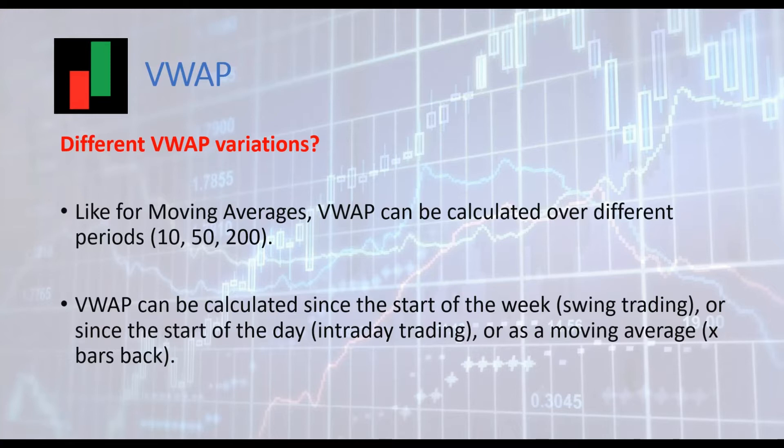There are different variations for the calculation of VWAP. First, we can calculate VWAP based on a certain quantity of bars: 10, 50, or 100. We can also start the calculation at the beginning of the weekly or daily session — in this case we calculate VWAP for the session. And finally, we can calculate VWAP as a moving average.